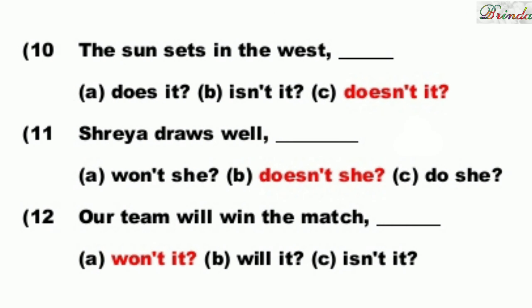Next: The sun sets in the west. There is no auxiliary verb here, so we turn it into the opposite — The sun doesn't set in the west — giving us 'doesn't'. Options: does it, isn't it, doesn't it. The answer is: doesn't it.